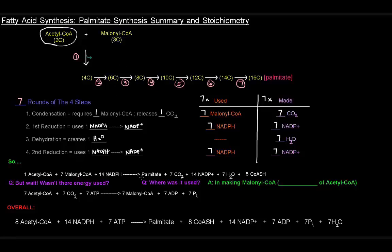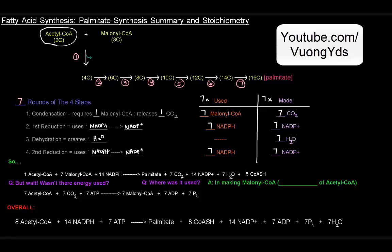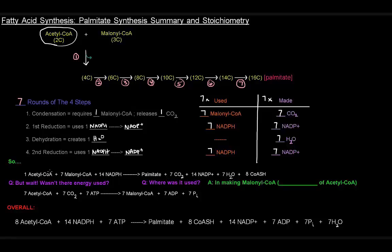We also used 14 NADPHs. What did we get in the products? We got one palmitate, seven carbon dioxides, 14 NADP+, seven waters, and all the coenzyme A's were knocked off. There was one on the acetyl-CoA and seven on the malonyl-CoA's, so that's eight coenzyme A's. That pretty much wraps it up.